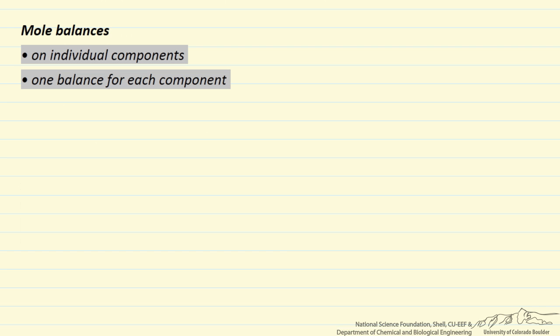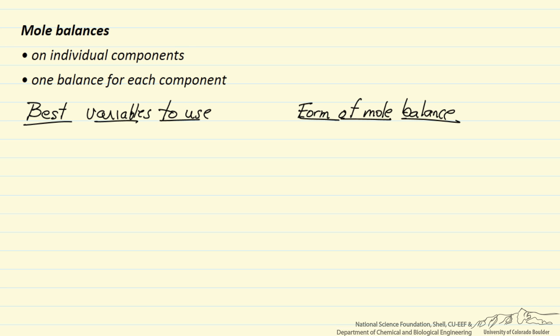Let's look at the best variables to use when we write down these mole balances for each ideal type of reactor. We'll start with the batch reactor and semi-batch, because they have a lot of similarities. The best variables are the number of moles of each species for batch. For semi-batch, we also need the molar flow rate. This is total number of moles in the reactor, and this is moles per time.